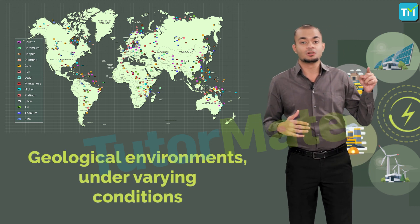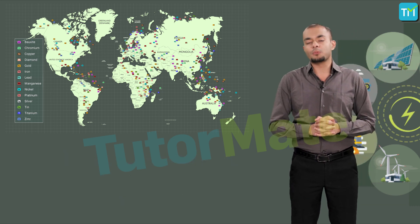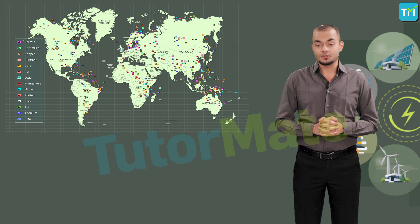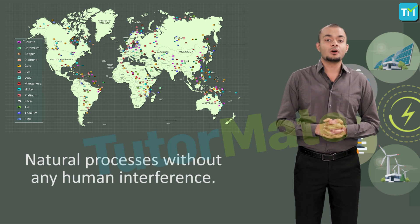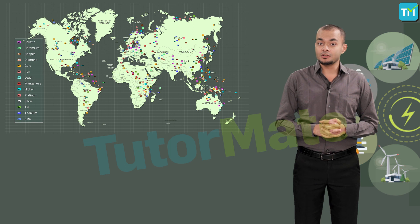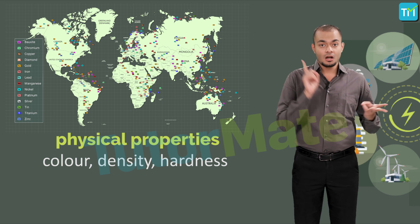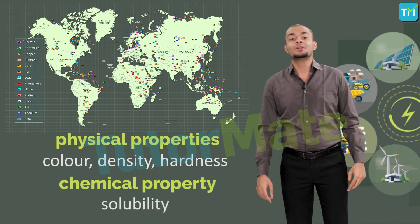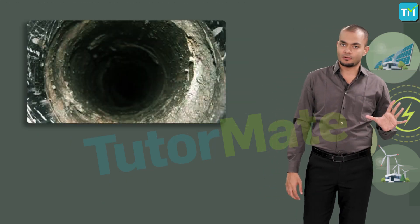Minerals are naturally occurring substances and they are formed in different types of geological environments under varying conditions, which are basically responsible for the traits that these minerals exhibit. They are created by natural processes without any human interference, and they can be identified on the basis of their physical properties such as color, density, and hardness, and the chemical property of solubility.